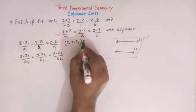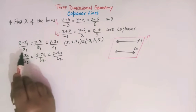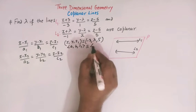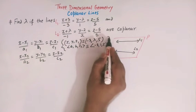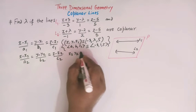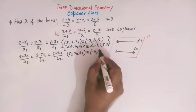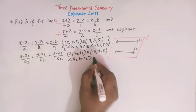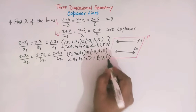Comparing L1 with the standard form, the point it passes through is X1, Y1, Z1 = (-3, λ, 5), and the direction ratios A1, B1, C1 = (-3, 1, 5). Similarly for L2, the point X2, Y2, Z2 = (-λ, 2, 5), and the direction ratios A2, B2, C2 = (-1, 2, 5).